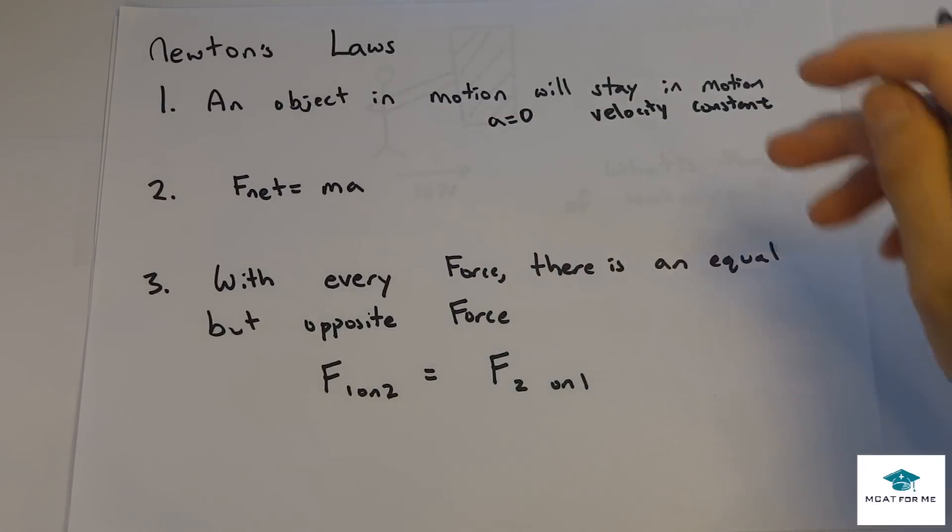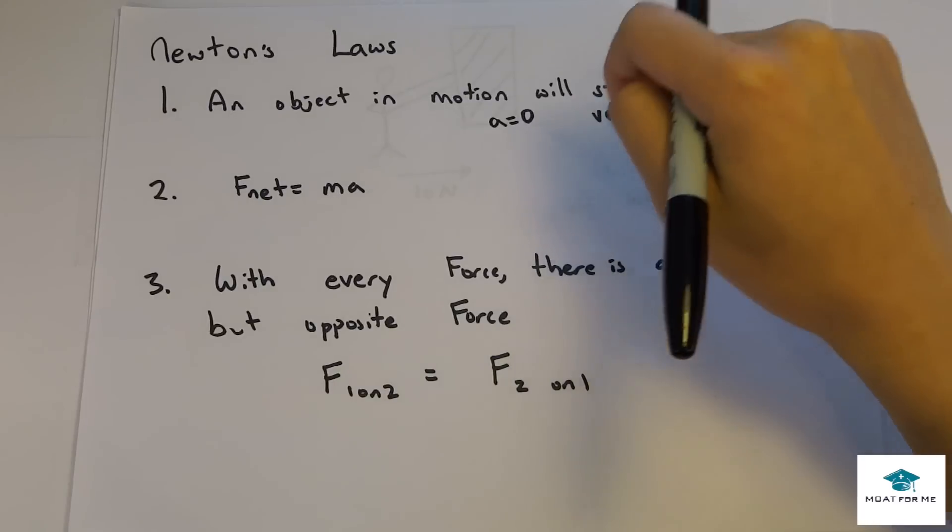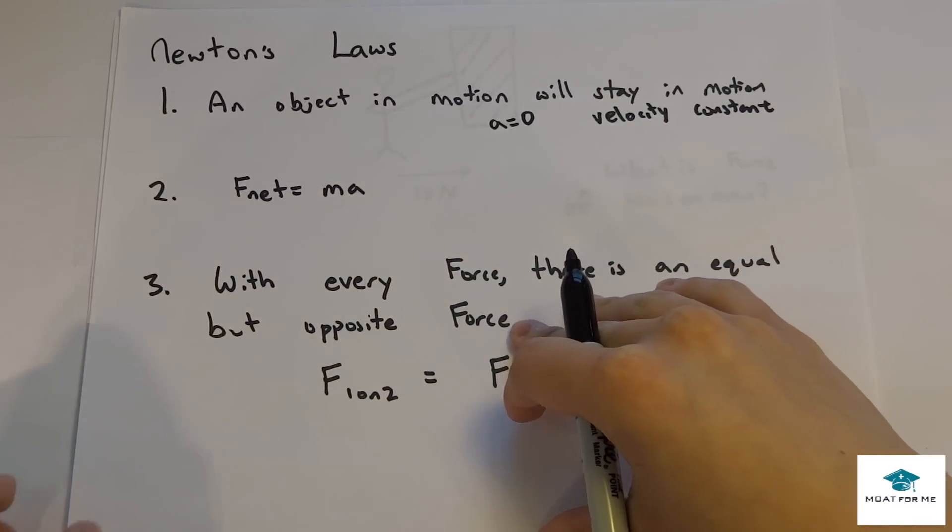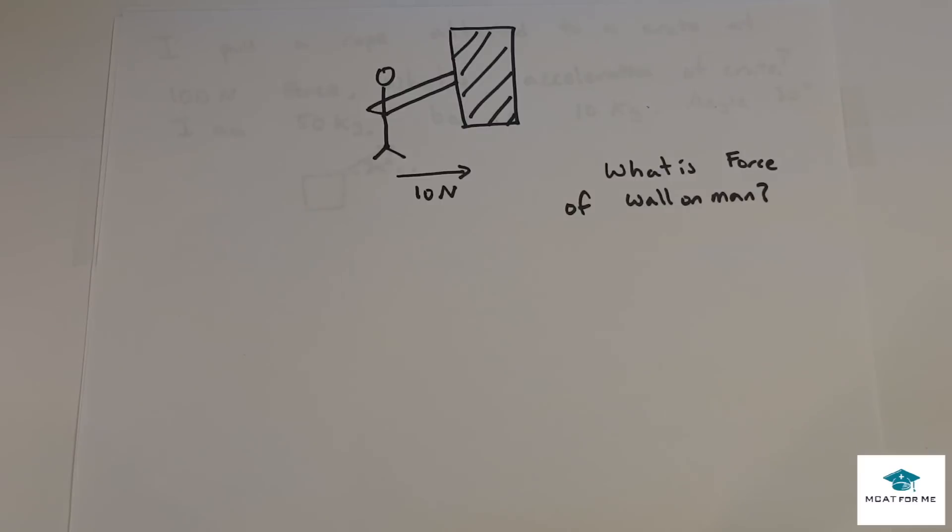And that's saying that, for example, if I'm pushing on this table at a certain force, the table is pushing on me at an equal but opposite force. And we'll see that right here.